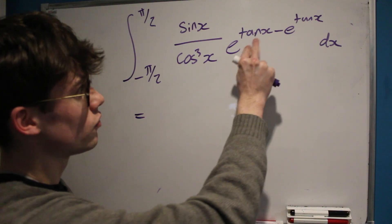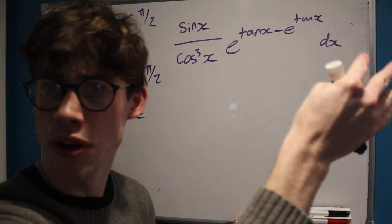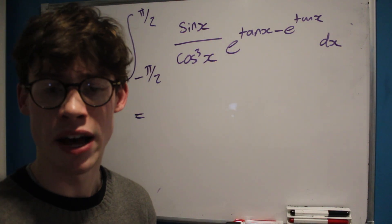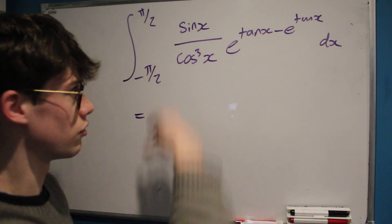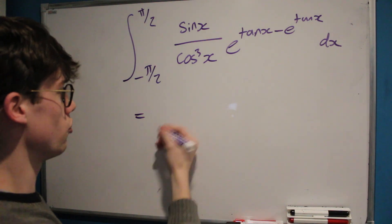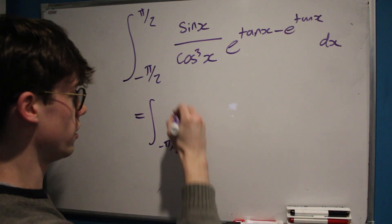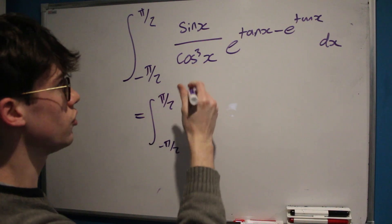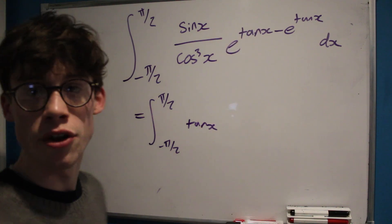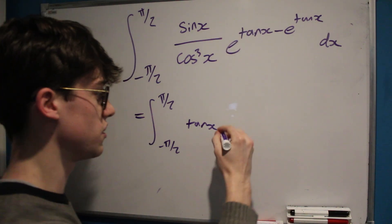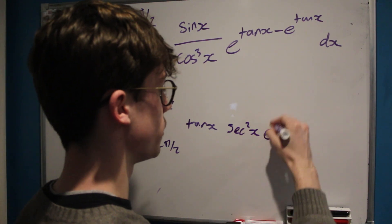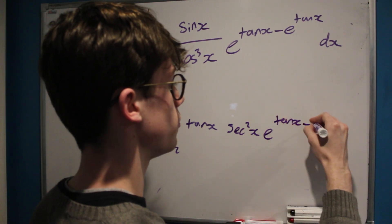Given that we've got tan x as an exponent, it seems like working in terms of tan and sec is a good way to go about solving this integral, so let's convert our sine x and cos x into those two. That gives us the integral from negative pi over 2 to pi over 2 of: sine x over cos x is tan x, and that leaves us with 1 over cos squared x, which is conveniently sec squared x — and of course this is tempting us to make a substitution that we'll talk about in a minute.